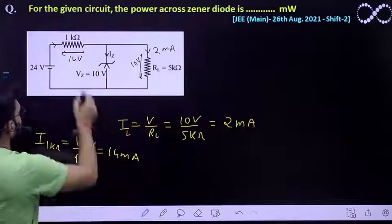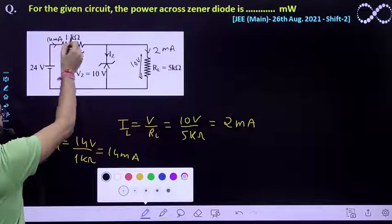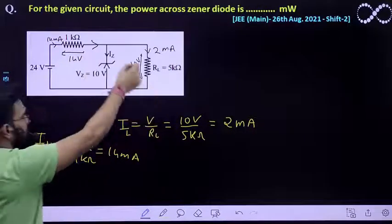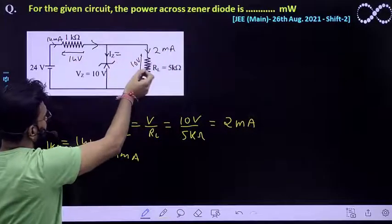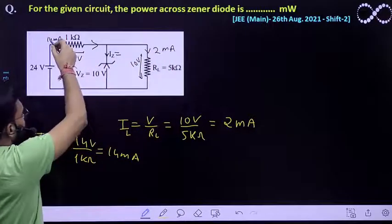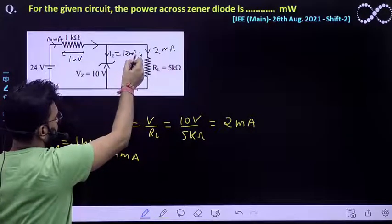So that means this is the current supplied by battery which will go like this and 2 ampere current will be divided over here. So this Zener current must be equal to 14 minus 2 milliampere which is 12 milliampere.